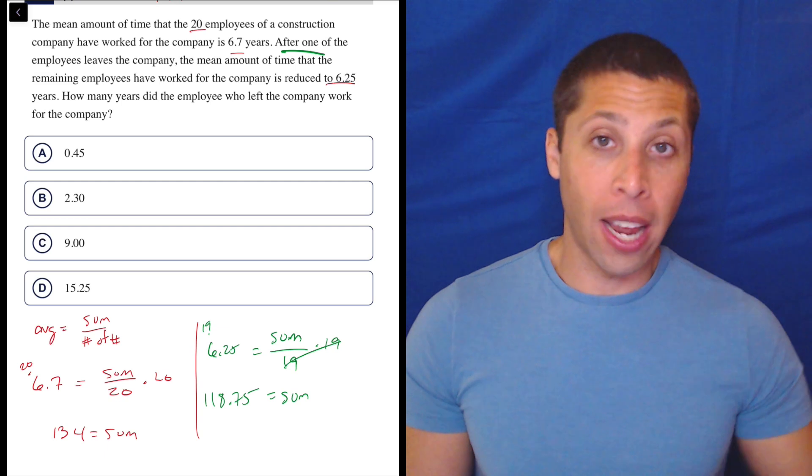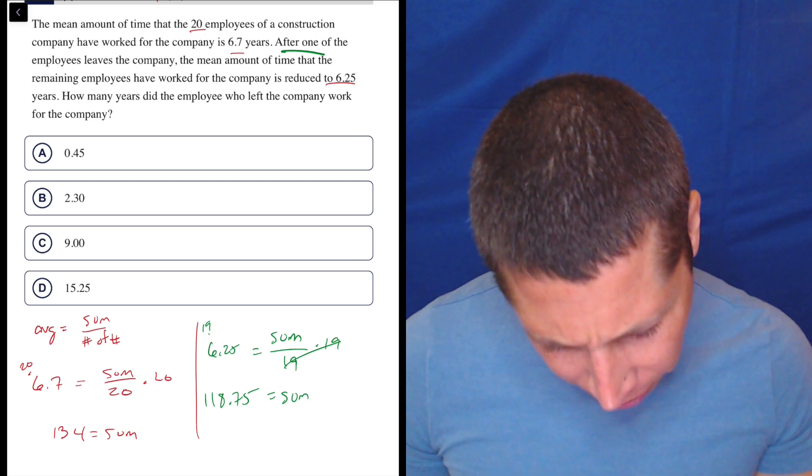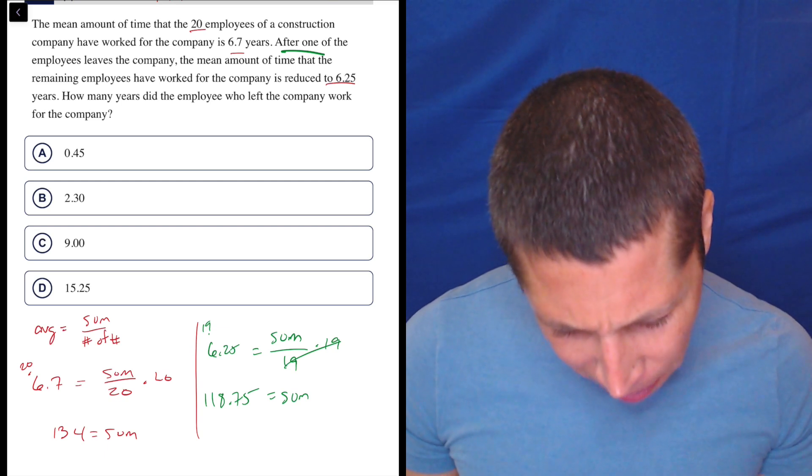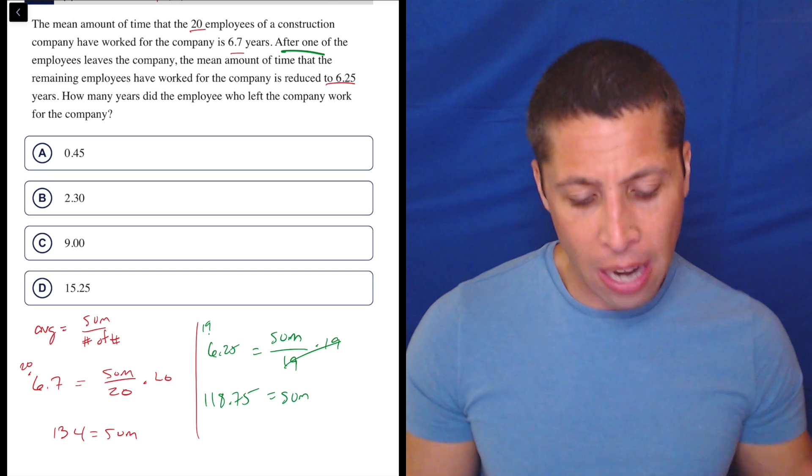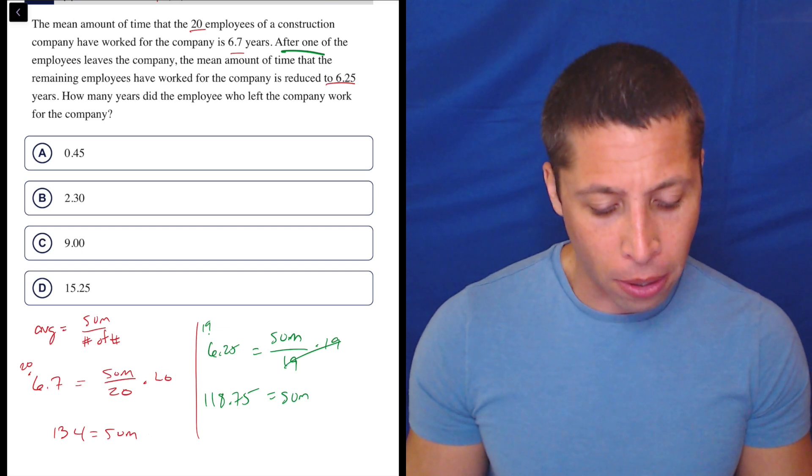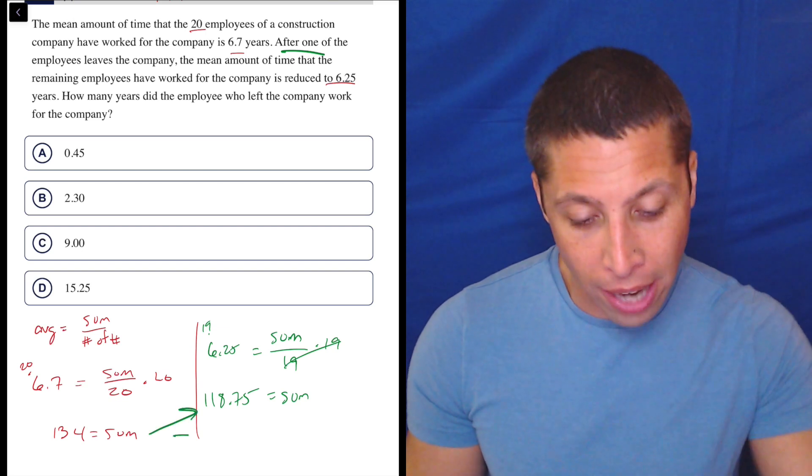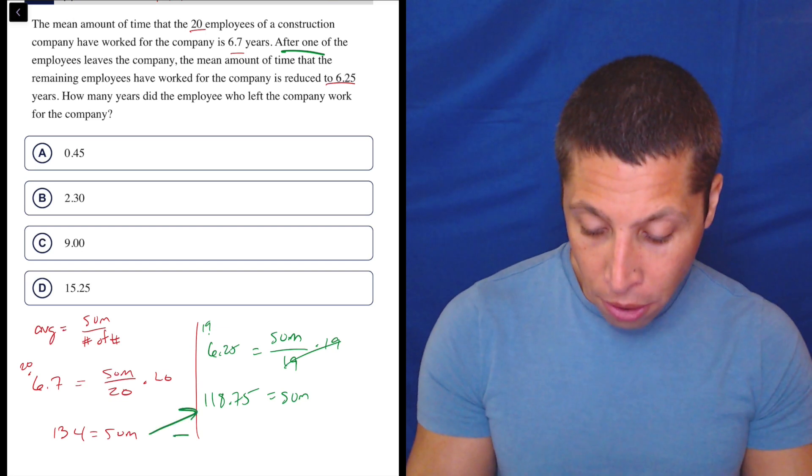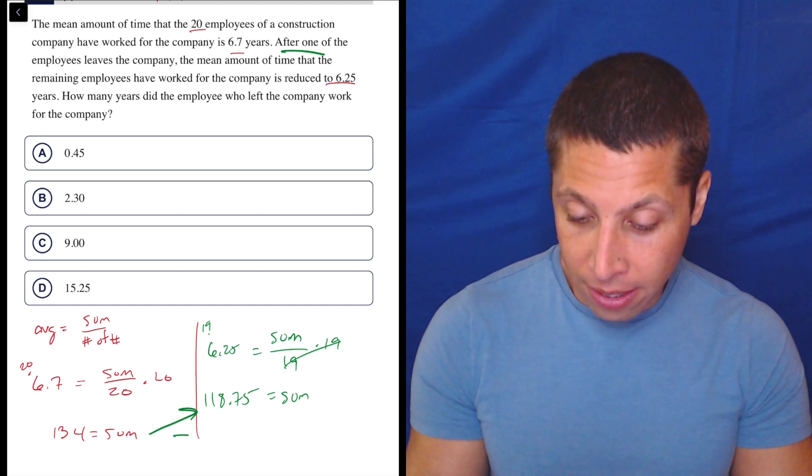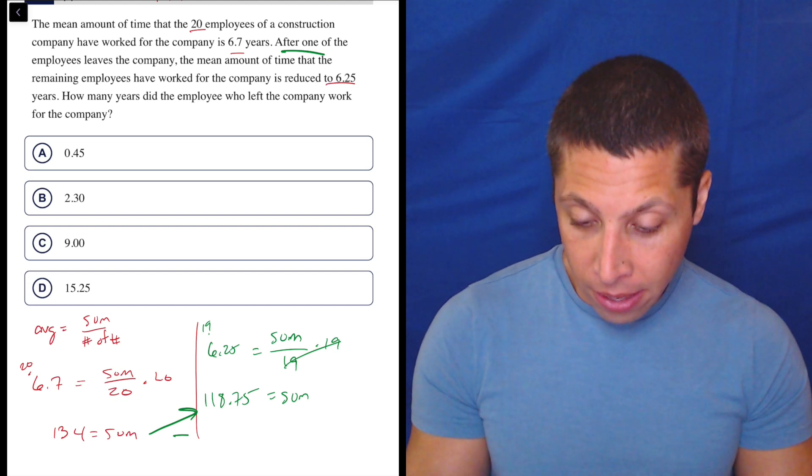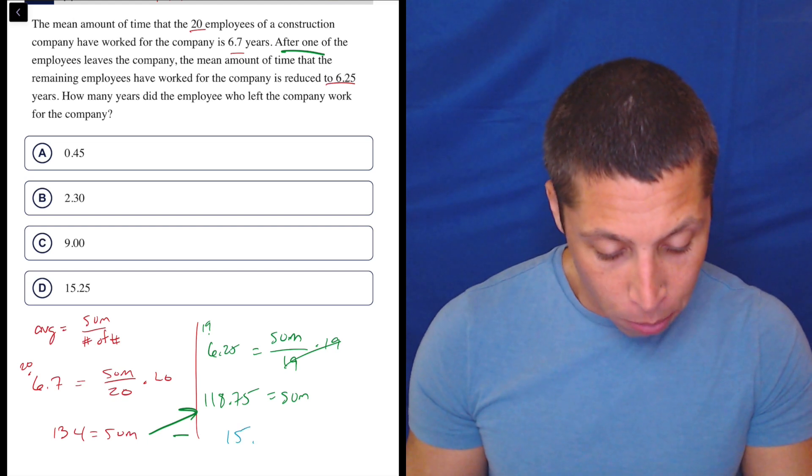So we lost a person and the total number of years has decreased by some number. Let's find that decrease. Let's do a little subtraction here. So 134 minus 118.75 is 15.25.